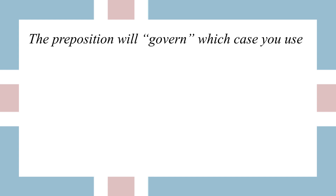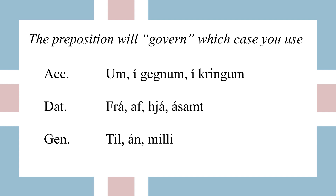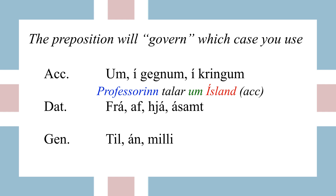When there's an object of the preposition, the preposition will tell you which case to use. After the prepositions um (about), ikeknum (through), and ikrinkum (around), you always have accusative. So 'professorin talar um Island' — the professor talks about Iceland — um always has accusative after, so Island is the accusative form of Iceland. Some prepositions always take dative, like frau (from/of), hjau (near), and ausamt (along with). In 'han er frau Islandi' — he is from Iceland — Islandi is the dative form because it follows frau.